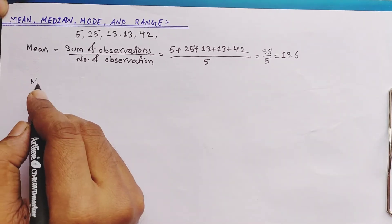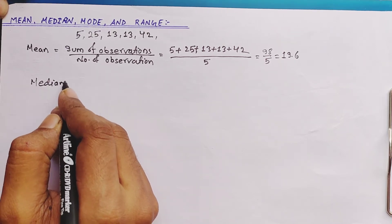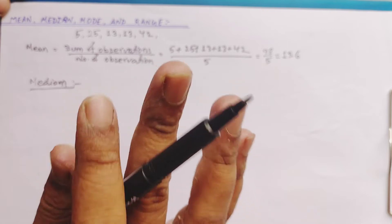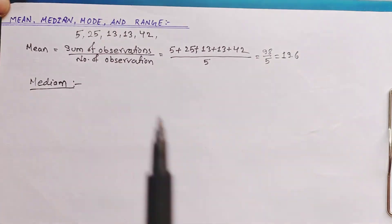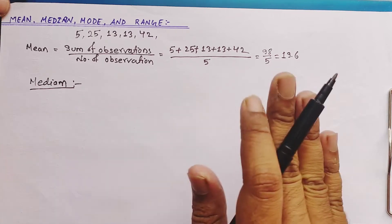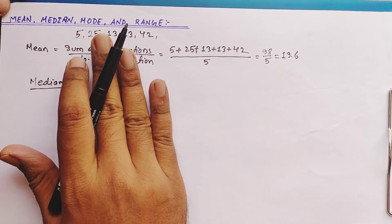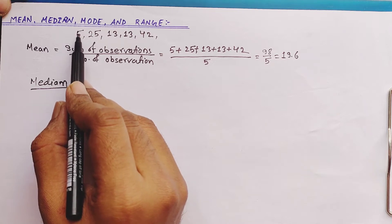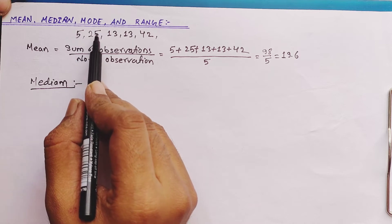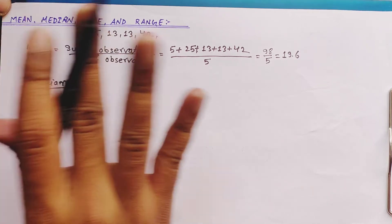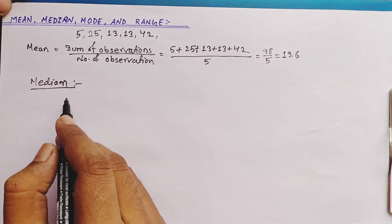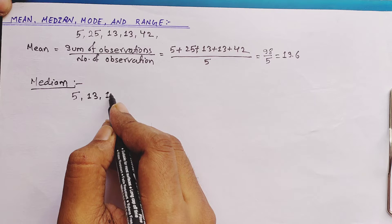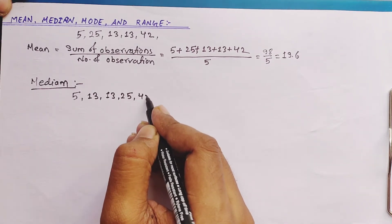For median there are a few cases. First of all, we need to rewrite the given observations in ascending order — that is, smaller to greater. Here our original observations are 5, 25, 13, 13, 42, but 25 is followed by 13 which is smaller, so the order is not ascending. We must arrange them: 5, 13, 13, 25, 42.